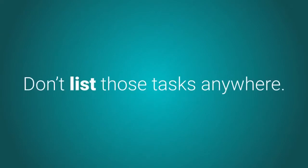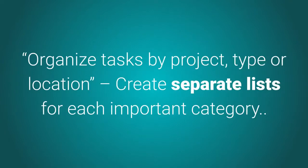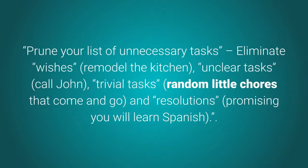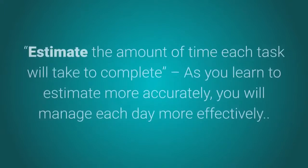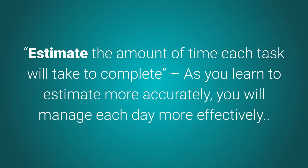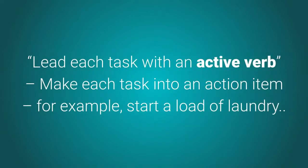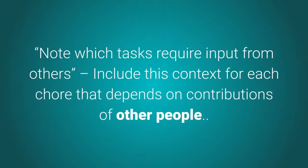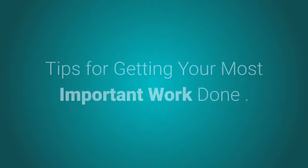For tiny tasks like making a quick call, don't list them anywhere — just do them. Sixth, organize tasks by project type or location and create separate lists for each important category. Seventh, prune your list of unnecessary tasks — eliminate wishes such as 'remodel the kitchen,' unclear tasks like 'call John,' trivial random chores, and resolutions like 'learn Spanish.' Eighth, estimate the amount of time each task will take; as you estimate more accurately, you will manage each day more effectively. Ninth, begin each task with an active verb to make it an action item — for example, 'start a load of laundry.' Tenth, note which tasks require input from others and include this context for each chore that depends on contributions from other people.